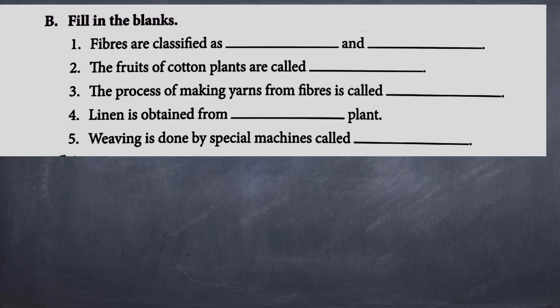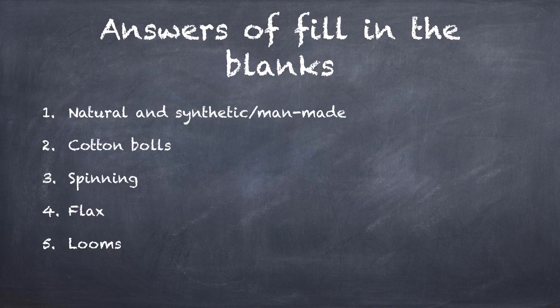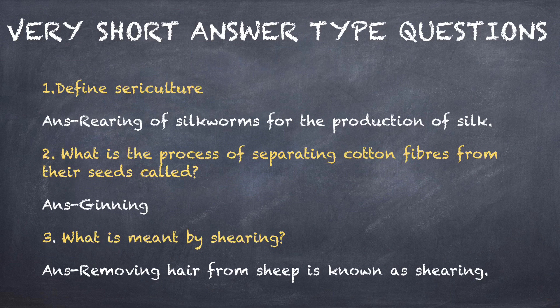Now let's check your answers. The answers of fill in the blanks are — first: natural and synthetic fiber or man-made fiber. Second: cotton balls. Third: spinning. Fourth: flax. Fifth: looms. For copying the answers, you will be provided a PDF for these question answers, so just try to answer the questions.